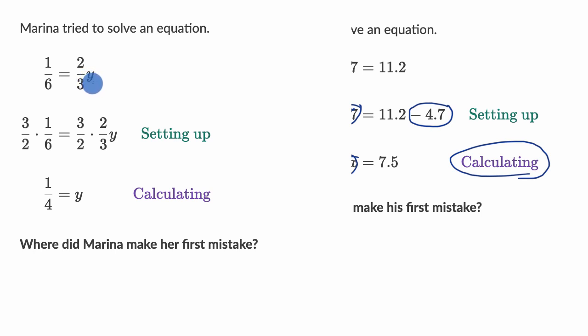So the first step, or the first thing that Marina did right over here, is to multiply both sides of this equation by the reciprocal of 2/3, which is 3/2. Multiply the left-hand side by 3/2, multiply the right-hand side by 3/2, which is a very reasonable thing to do.